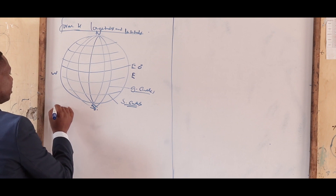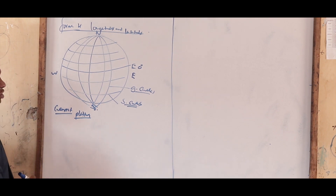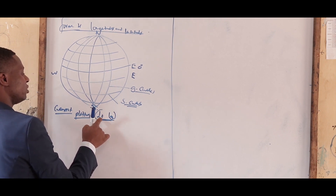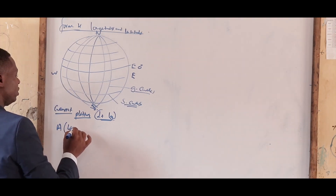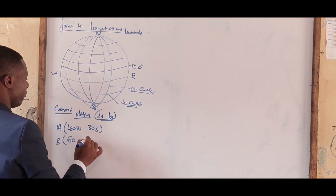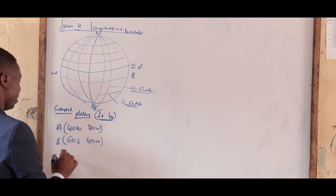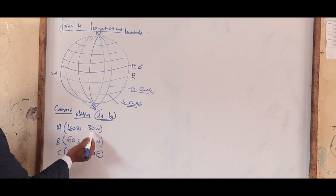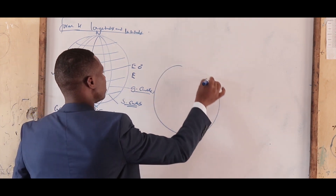We'll start with concept number one: plotting a position on the surface of the earth. You start with the latitude followed by the longitude. For example, you can be asked to plot point A at 40 degrees north 30 west, point B at 60 degrees south 40 west, and point C at 50 degrees north 70 east.